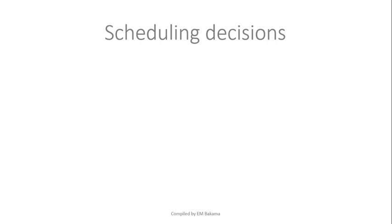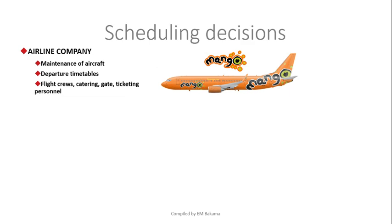These are some scheduling decisions — an example of how scheduling should be applied. For example, in an airline company like Mango, a South African airline. As far as scheduling decisions are concerned, they can make decisions on maintenance of the aircraft — for example, they decide to do maintenance every Monday, and that day there's no flight. Another example is the departure timetable. They also schedule the flight crews, catering, gate, ticketing, and personnel — not randomly, but based on availability of staff and the airplane.